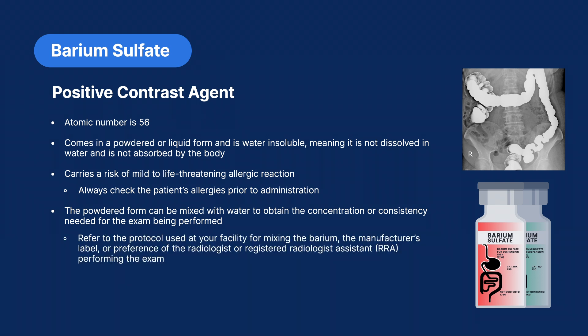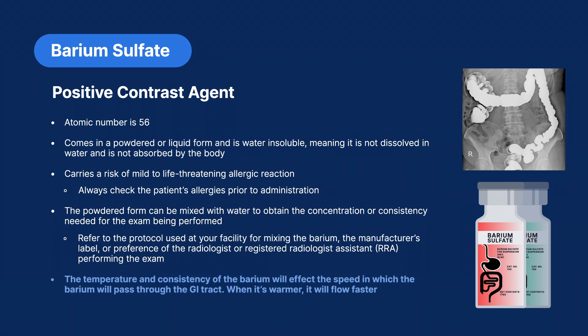You should refer to the protocol used at your facility for mixing the barium, the manufacturer's label, or the preference of the radiologist or RRA performing the exam. Note that the temperature and consistency of the barium will affect the speed at which it passes through the GI tract — when it's warmer, it will flow faster. Barium strongly adheres to and defines the mucosal lining of the alimentary tract.